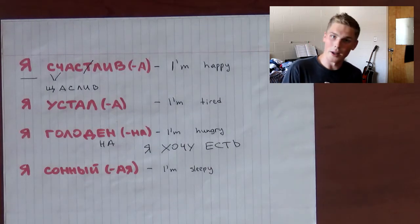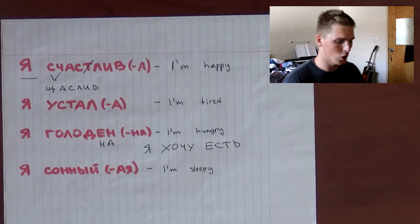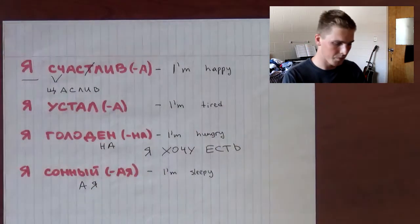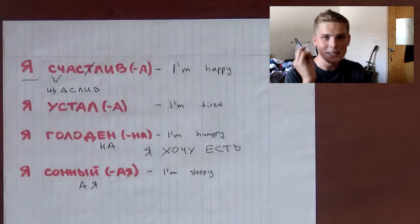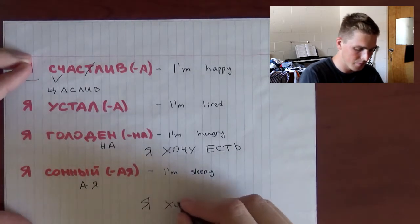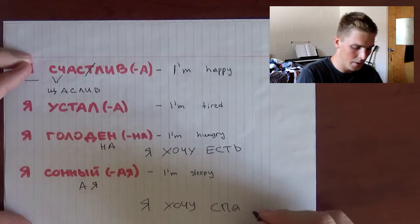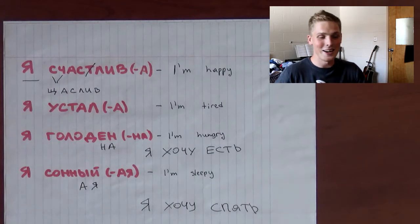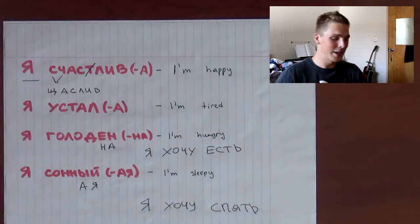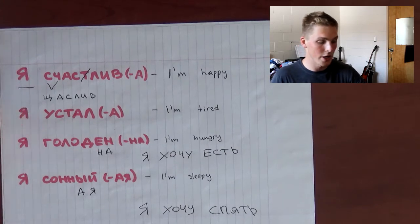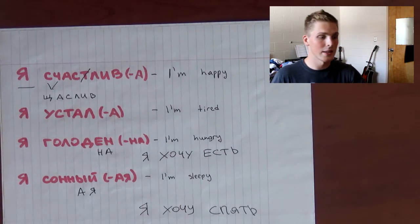The fourth and final one on this list is Я сонный for guys, or Я сонная for ladies — we just replace УЙ with АЯ for the feminine form — and it means I am sleepy. Again, in Russian we are most likely to say Я хочу спать, which is more common than Я сонный or Я сонная. But since this is an emotions and feelings topic, I'll use Я сонный or Я сонная. So to recap: Я счастлив — I'm happy; Я устал / Я устала — I'm tired; Я голоден / Я голодна — I'm hungry; Я сонный / Я сонная — I'm sleepy.